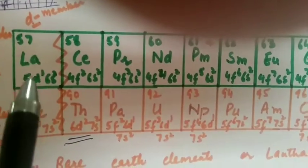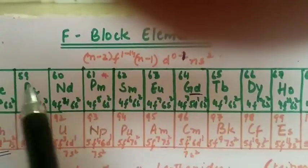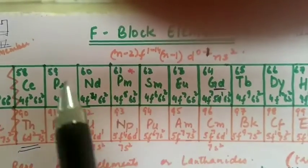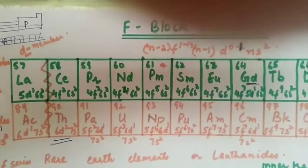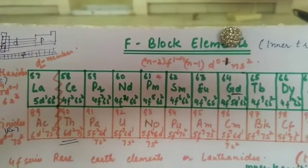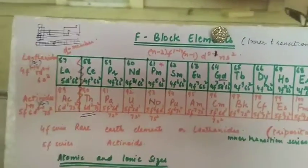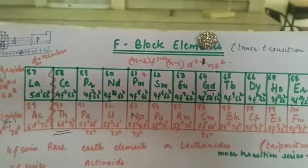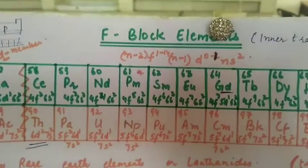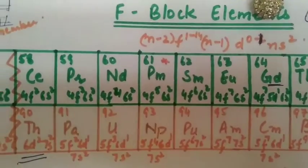Lanthanum actually belongs to d-block elements, but it has many properties which are similar to f-block elements. Whatever elements follow lanthanum are 4f elements. This is why these elements are named lanthanoids or lanthanides. So lanthanum can be grouped with f-block elements.